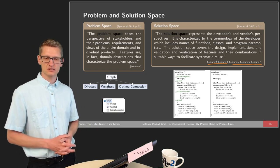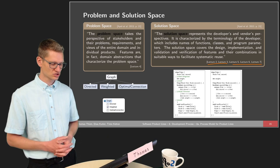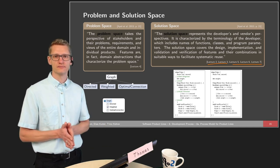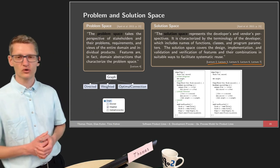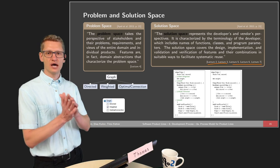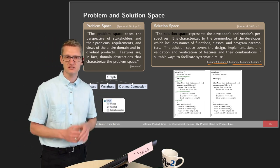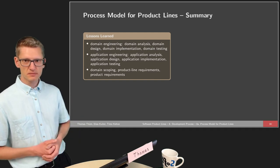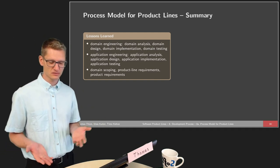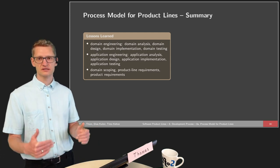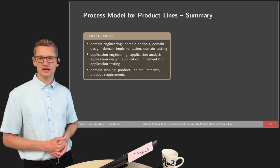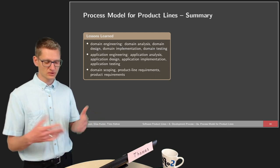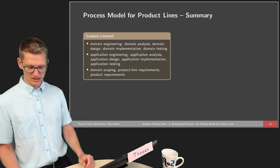One example of solution space artifacts is conditional compilation by means of preprocessors. In the overall picture, the problem space is found basically to the left — in analysis and feature modeling — while the solution space involves everything starting from domain design, domain implementation, domain testing, application design, implementation, and testing. In summary, this part covered domain engineering — consisting of domain analysis, domain design, domain implementation, and domain testing — and application engineering, which consists of the same phases but scoped to a particular product. We also discussed domain scoping, product line requirements, product requirements, and problem and solution space.